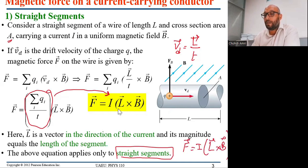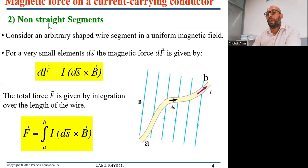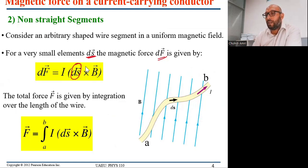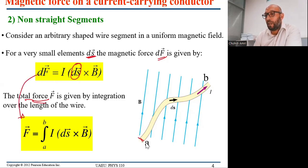L is a vector with magnitude equal to the length of the straight segment, directed along the current. This equation applies only for straight segments. For a non-straight segment, we consider an arbitrary-shaped wire in a uniform magnetic field. For an infinitesimal displacement dS, the magnetic force element is dF = I dS×B. To get the total force on the whole wire from A to B, we integrate: F = ∫I dS×B.